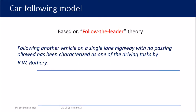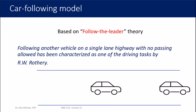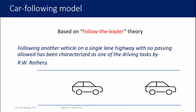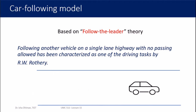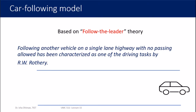The car following model is based on a 'follow the leader' theory. Following another vehicle on a single-lane highway with no passing allowed has been characterized as one of the primary driving tasks. Passing, meaning overtaking, is not allowed. So the only thing you can do is follow the vehicle in front of you — that is the meaning of car following and the follow-the-leader theory.